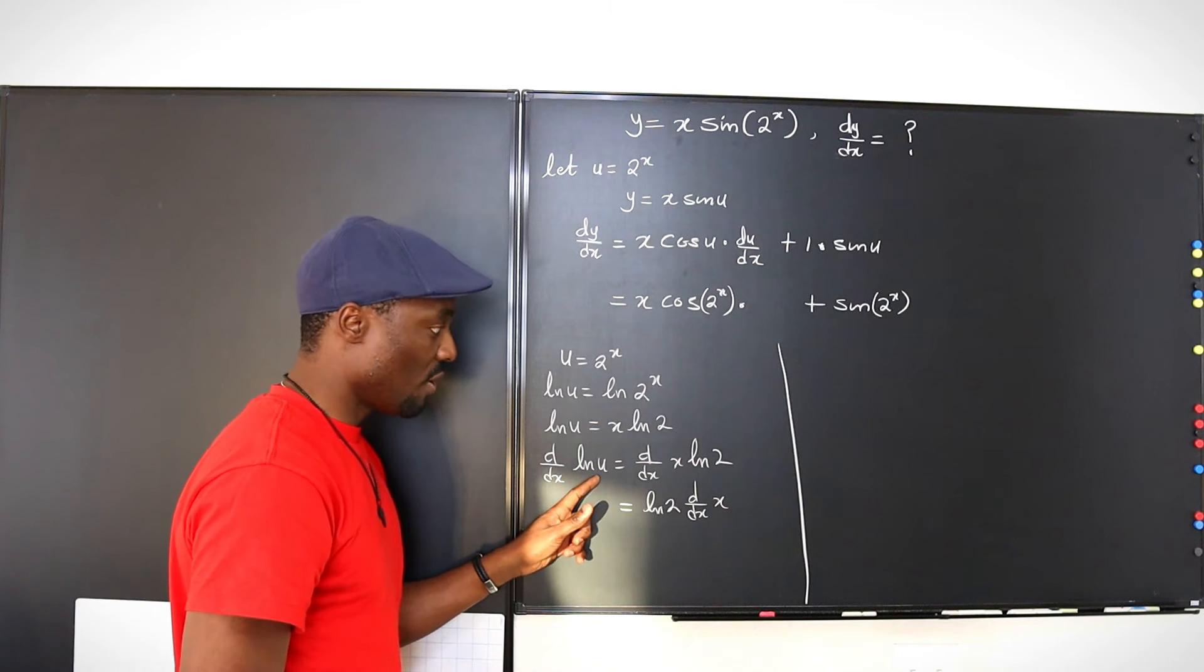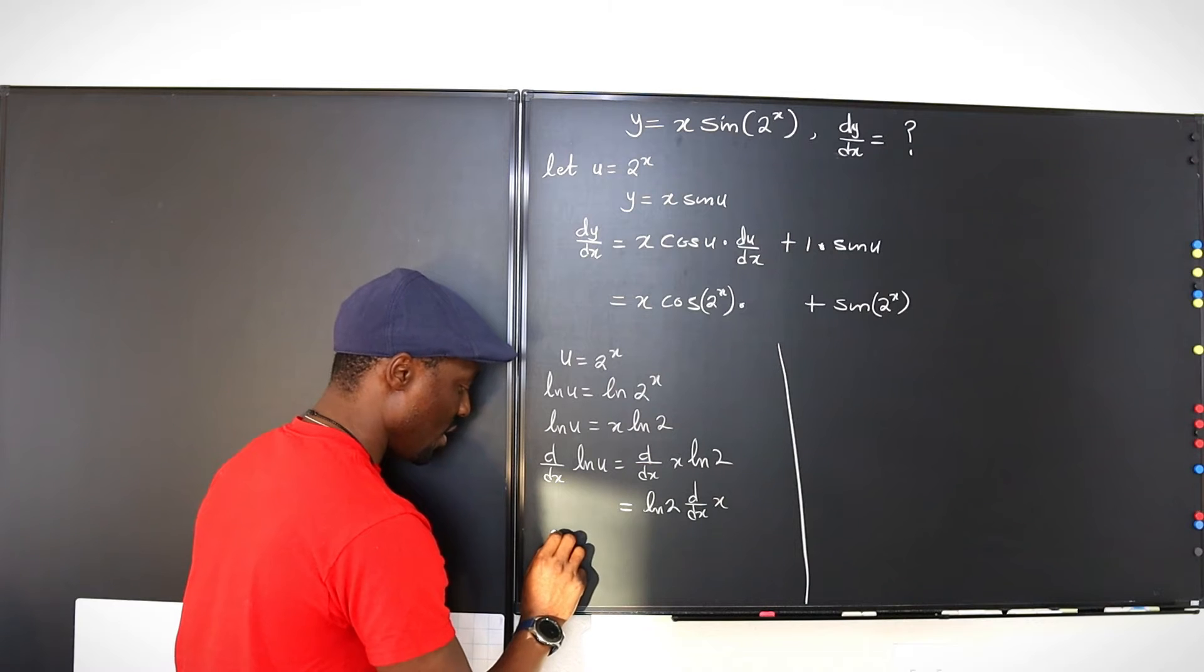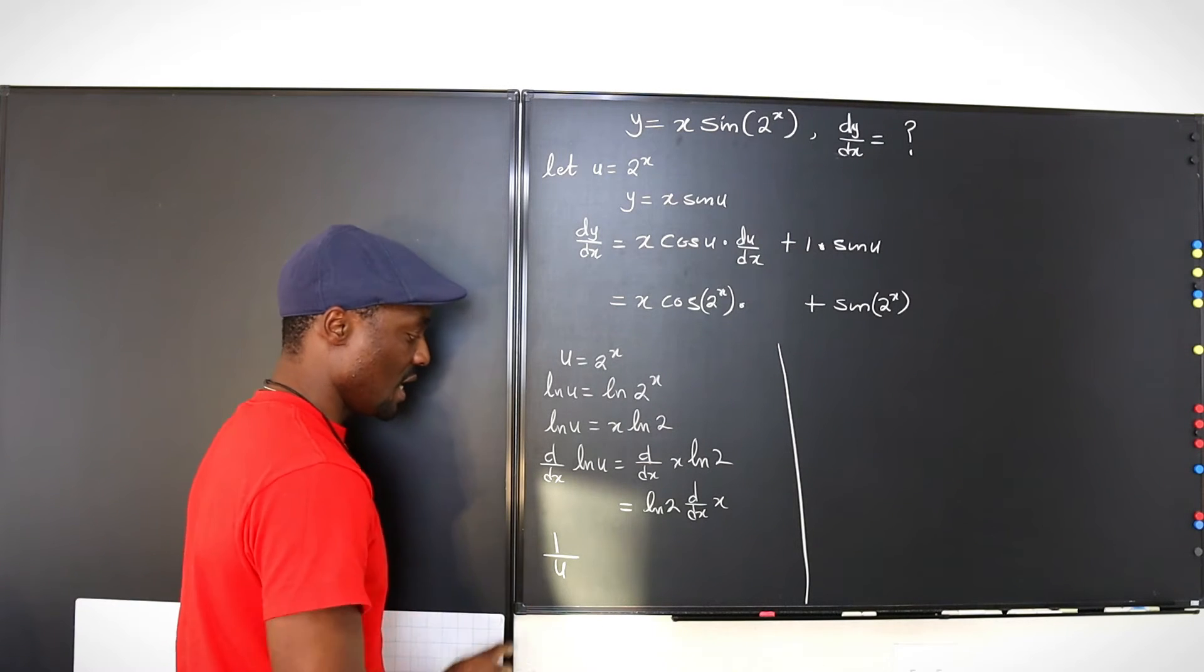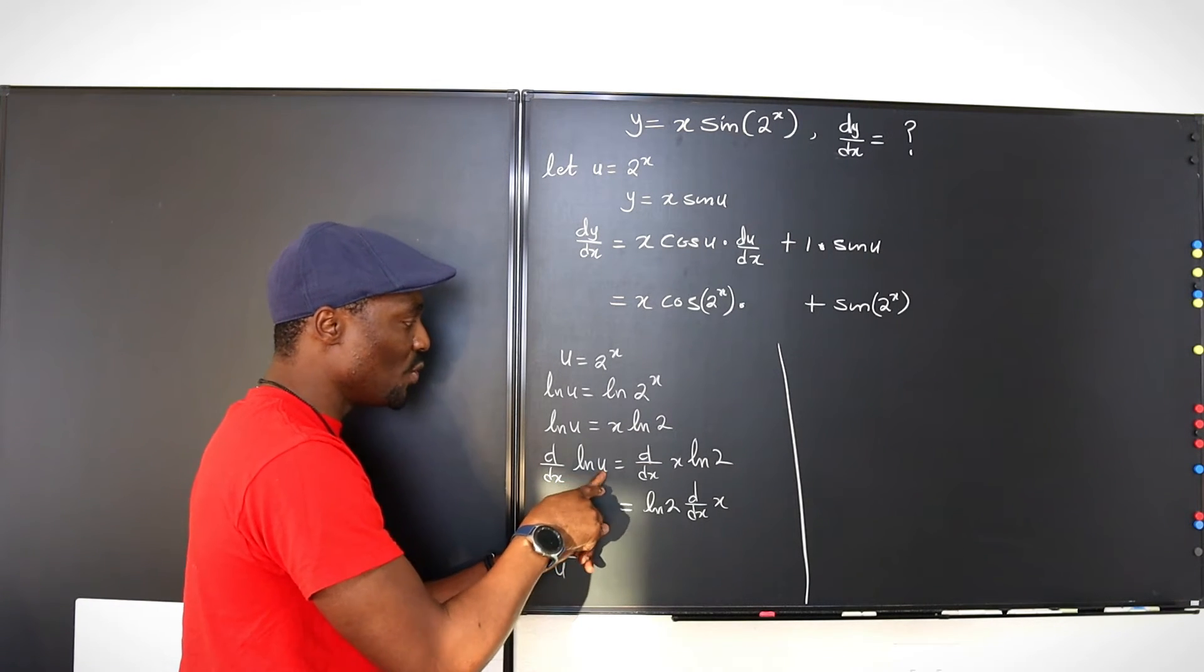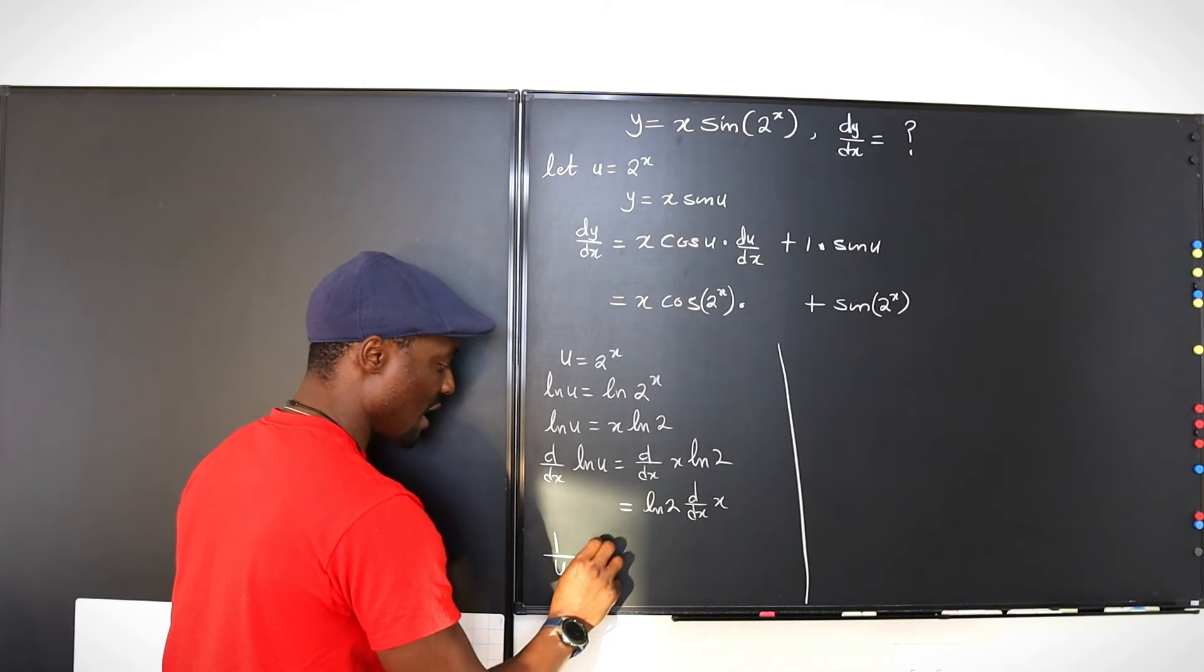Whenever you differentiate a function, the natural log of a function, you get 1 over that function. So we're supposed to have, let's write it here, 1 over u is what you get. But remember, u itself is a function of x, so you have to differentiate u, which will be times du dx.